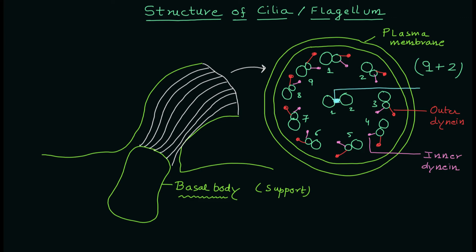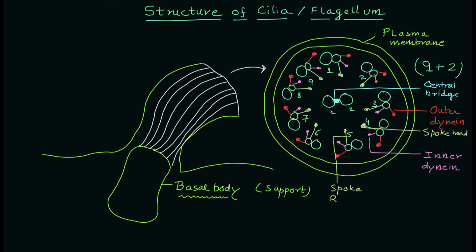In the center you can see the connecting bridge, also known as the central bridge structure. Apart from this, you have another structure which is the spoke structure — it has a head region and a radial region. The pointed region is known as the spoke head, and the elongated yellow structure is the radial region of the spoke.